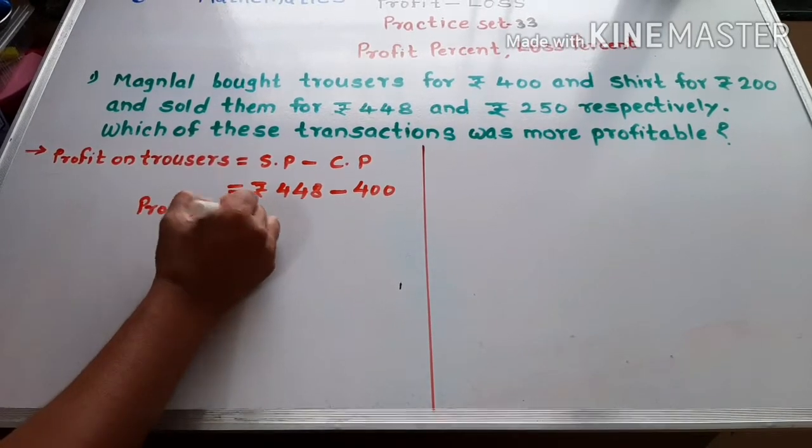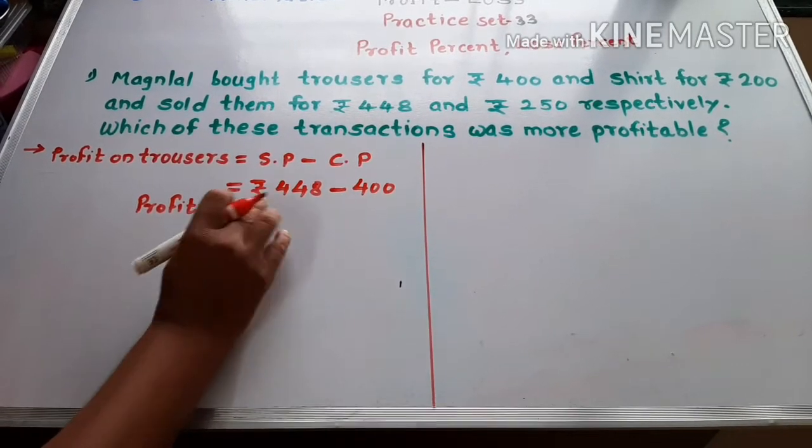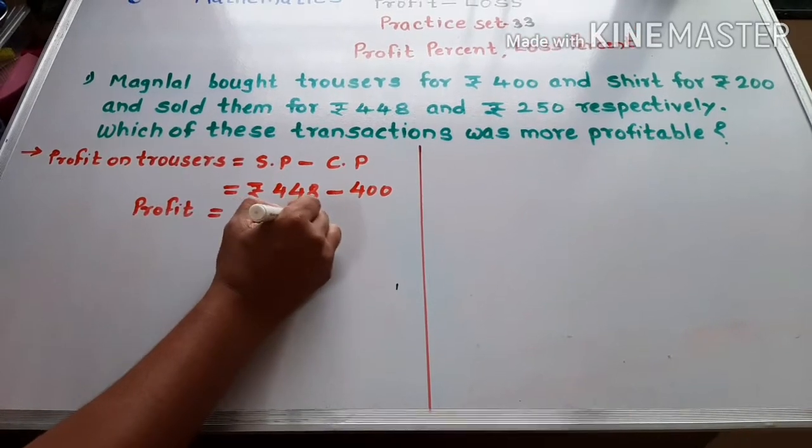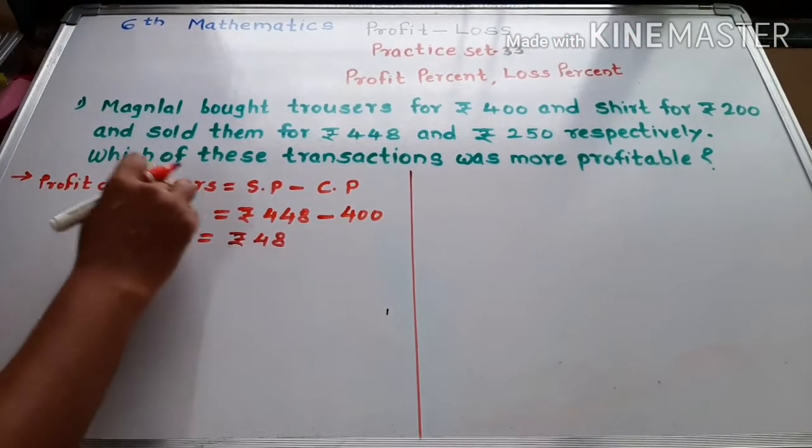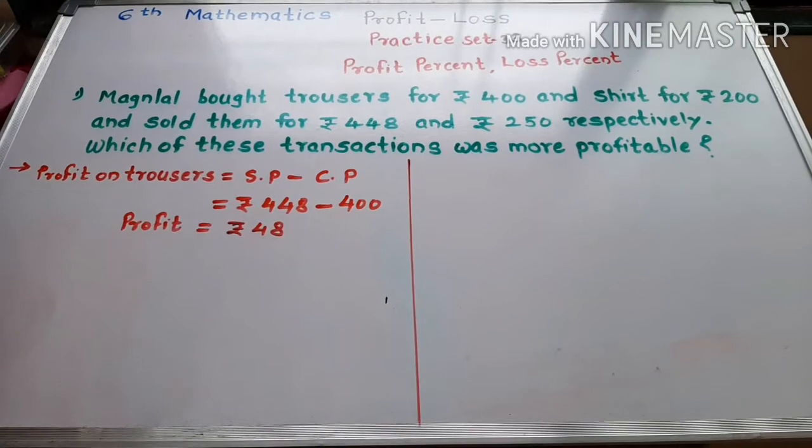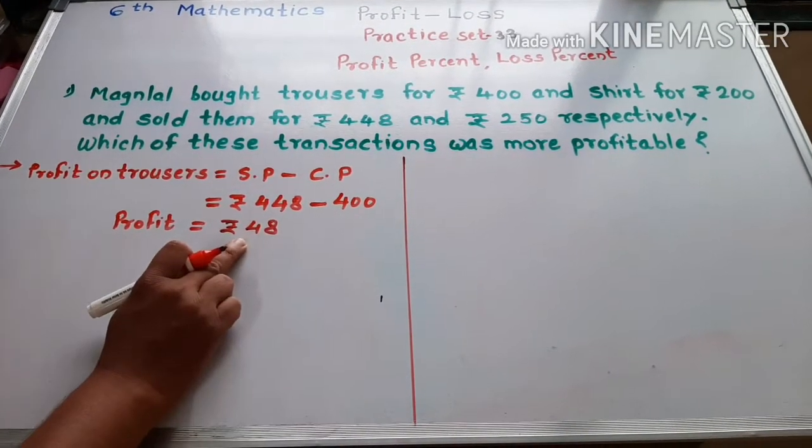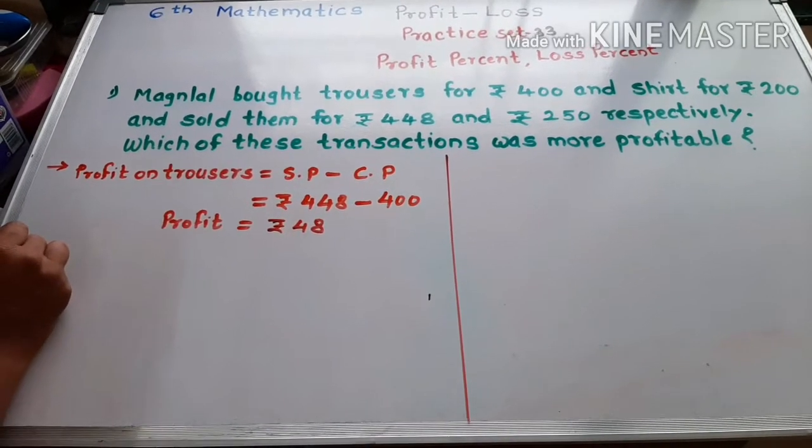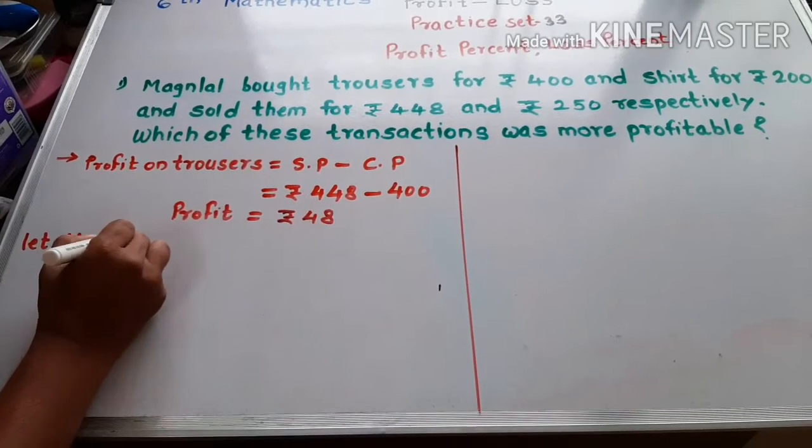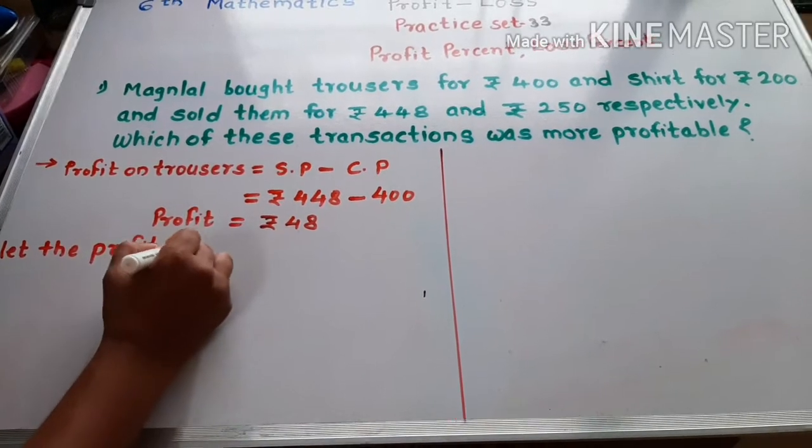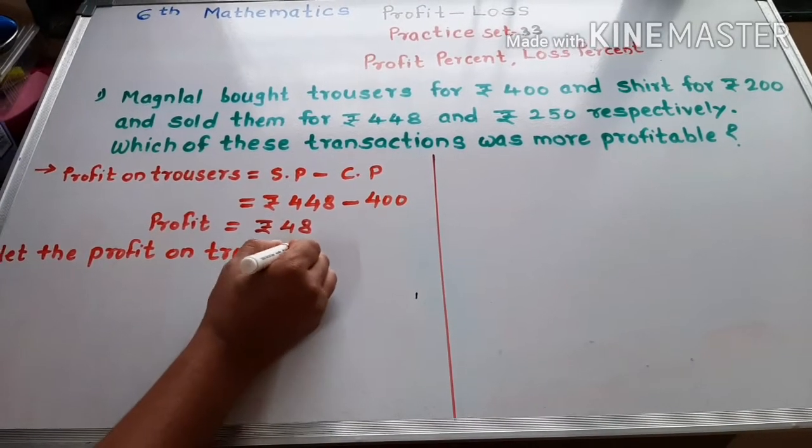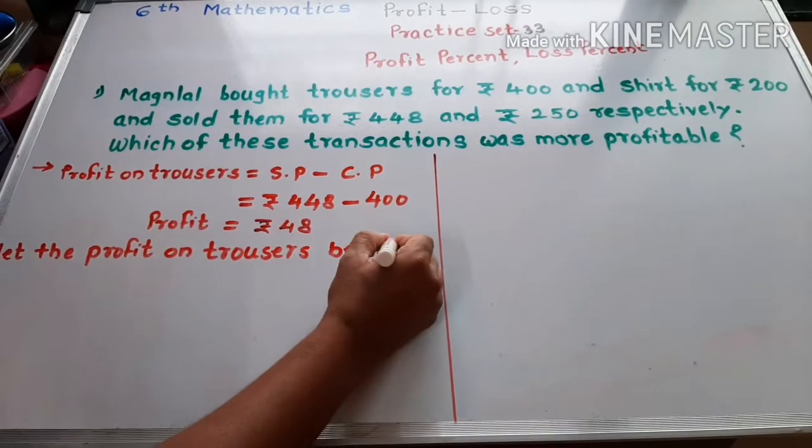Profit is equal to Rs. 48. The profit on trousers is Rs. 48. So let's find the profit percentage on trousers. Let the profit on trousers be X percent.